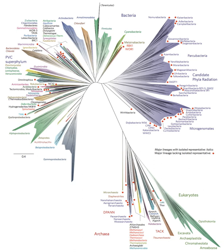As we here and there see a thin straggling branch springing from a fork low down in a tree, and which by some chance has been favoured and is still alive on its summit, so we occasionally see an animal like the Ornithorhynchus or Lepidosiren, which in some small degree connects by its affinities two large branches of life, and which has apparently been saved from fatal competition by having inhabited a protected station.